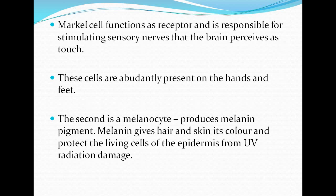These Merkel cells are abundantly present on the hands and feet. The second cell type is the melanocyte cell. From the name, you can know that melanocytes produce melanin pigment, which forms the color of the skin and hair.